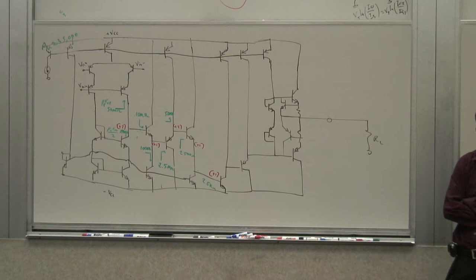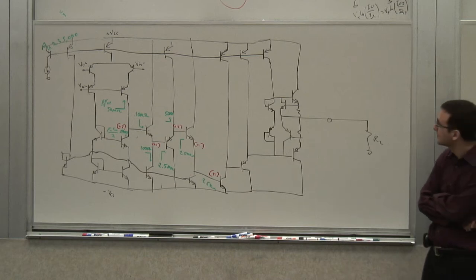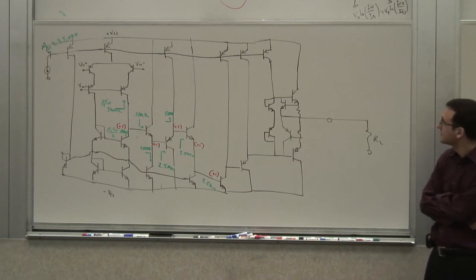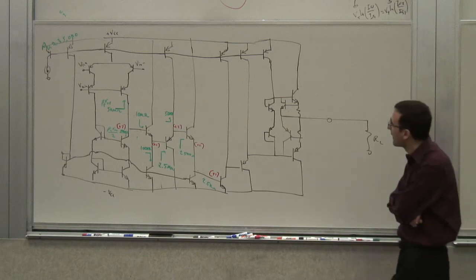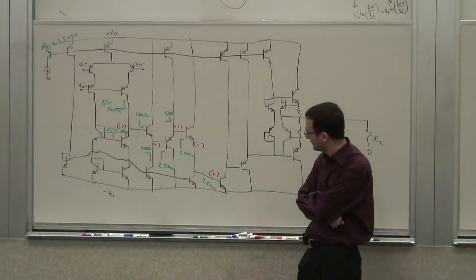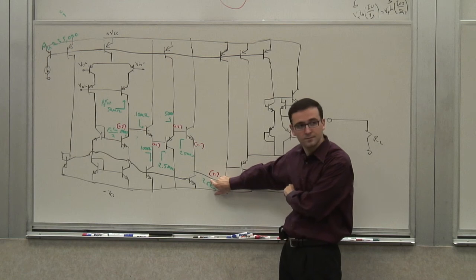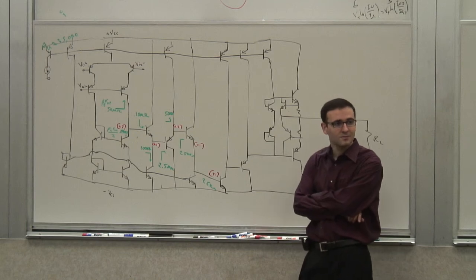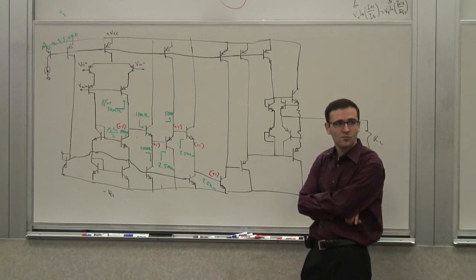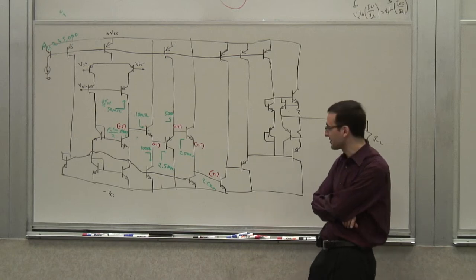I was thinking — we're talking about output swing. It's limited on the output stage. But how about in the second gain stage? The DC level is around 1 VBE on the base of that. So if you have a large gain on the first stage, it will swing that higher and could drive that out of its forward-active region. That's a very good question.